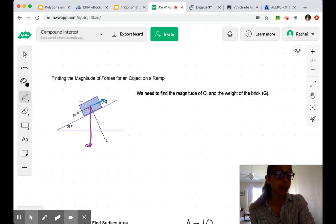So to find Q, we don't really know what we can do there, but Q and P are going to be the same. So if we can find P, we can find Q.